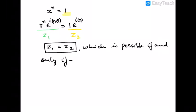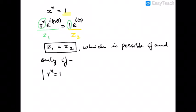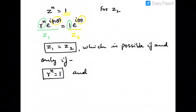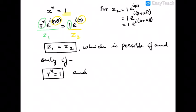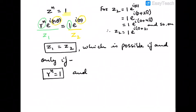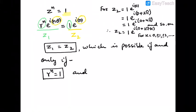So z = z2 is possible if and only if their r's are equal and their θ's are equal. Here r^n must equal 1. For the theta part, n·θ should equal 0, but since e^(i·0) is equivalent to e^(i(0 + 2πk)), we can write e^(i·0) as e^(i(0 + 2πk)) for k = 0, ±1, ±2, and so on.